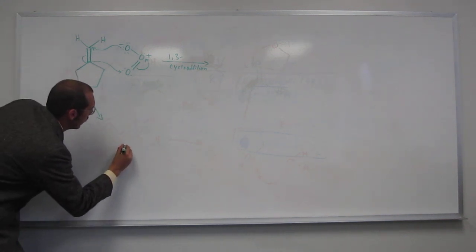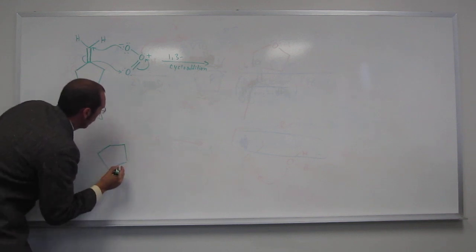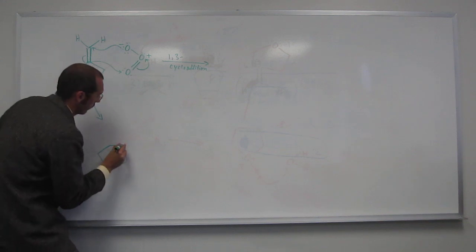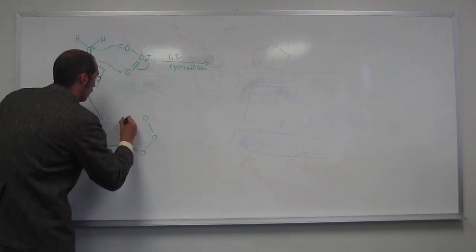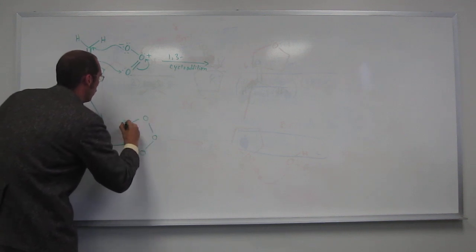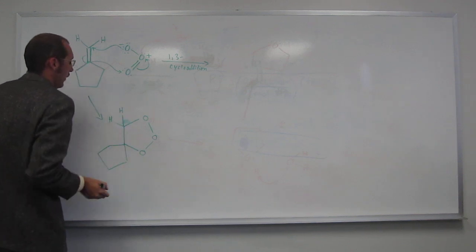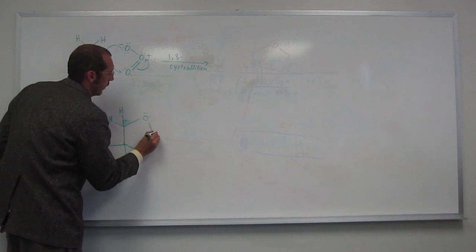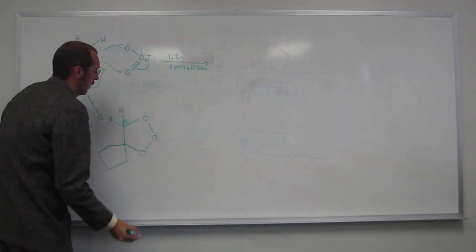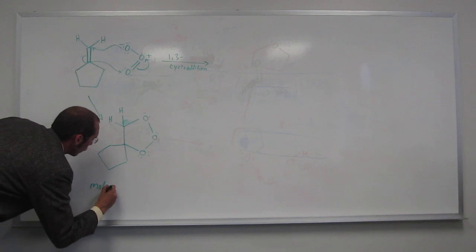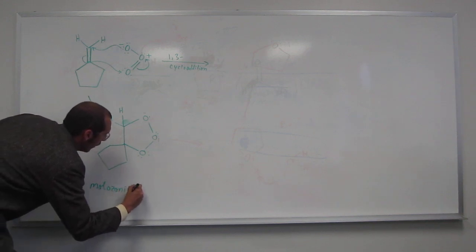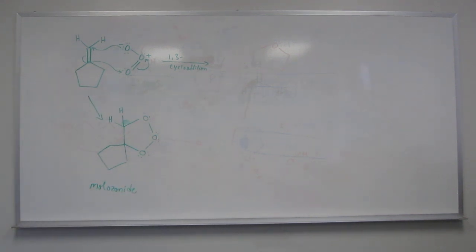So when we do that, we're going to make this intermediate. So let's put all our electrons in. Oh, he was talking about the second intermediate, which is called the trioxolane. We'll talk about that in a second.